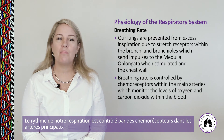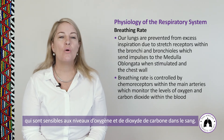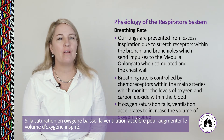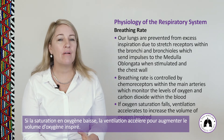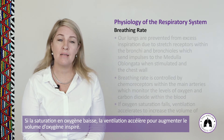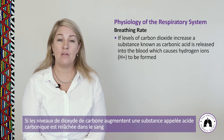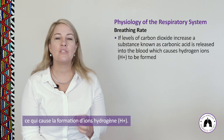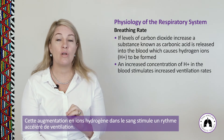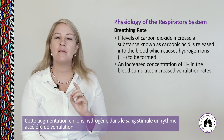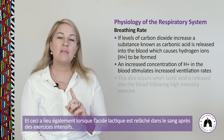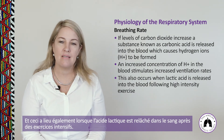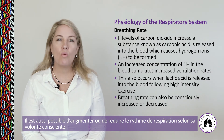Our breathing rate is controlled by chemoreceptors within the main arteries, which monitor oxygen and carbon dioxide levels in the blood. If oxygen saturation falls, ventilation accelerates to increase the volume of oxygen inspired. If carbon dioxide levels increase, carbonic acid is released into the blood, causing hydrogen ions to form; an increase in hydrogen ion concentration stimulates increased ventilation rates. This also occurs when lactic acid is released following high-intensity exercise. Breathing rate can also be consciously increased or decreased.